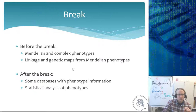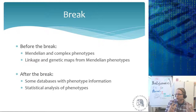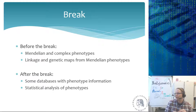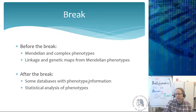Before the break we talked about Mendelian and complex phenotypes, linkage — how far apart two things are on the genome — and how to make genetic maps from Mendelian phenotypes using a two-point cross to determine distance and a three-point cross to determine order. After the break we will look at some databases with phenotypical information, talk about statistical analysis of different phenotypes, and go through database assignments — for example, finding which gene in humans causes color blindness in males.